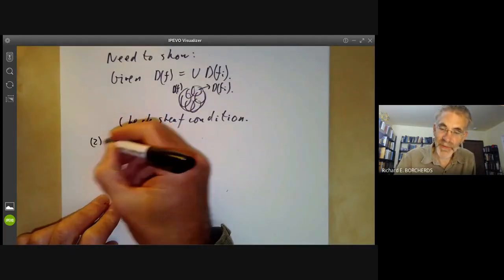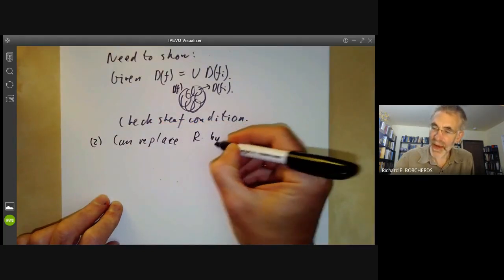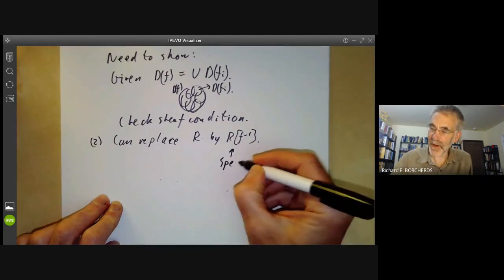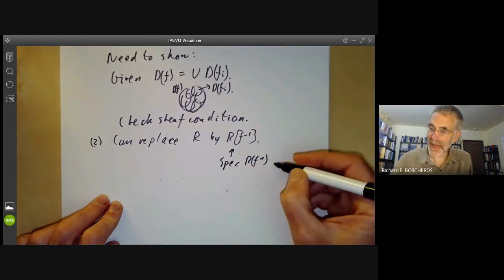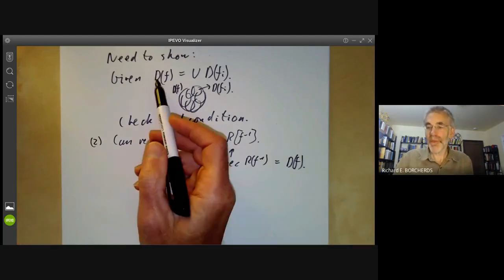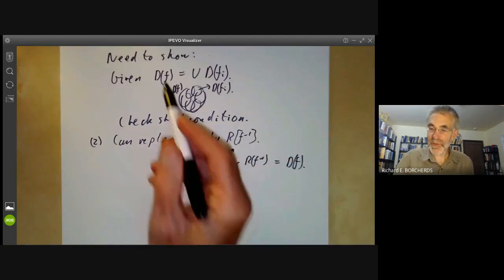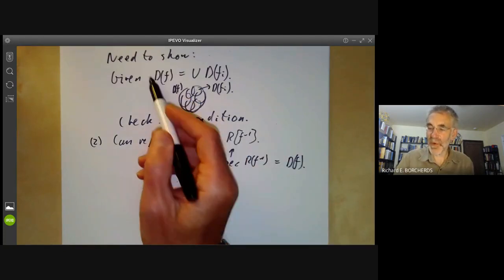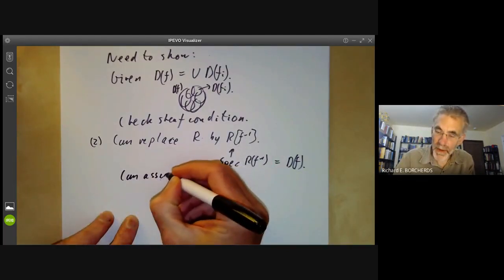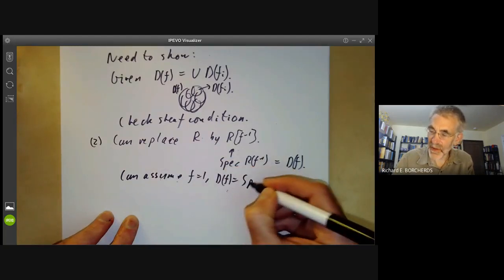The first reduction is we can replace R by R[F⁻¹]. The point is that the spectrum of R[F⁻¹] has underlying set essentially D(F). So instead of proving it for this set for the ring R, we can just prove it for the whole of the spectrum of a ring if we replace R by that. In other words, we can assume that F equals 1 and D(F) is the whole of the spectrum of R.